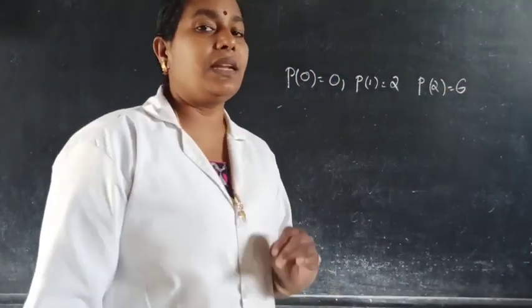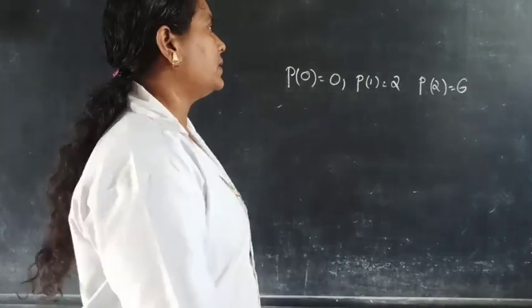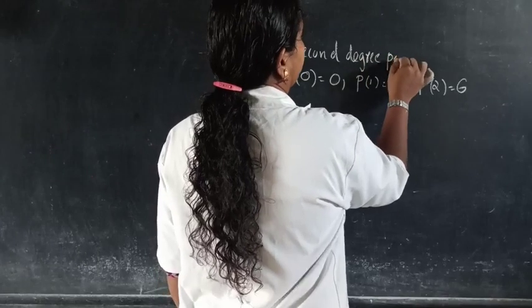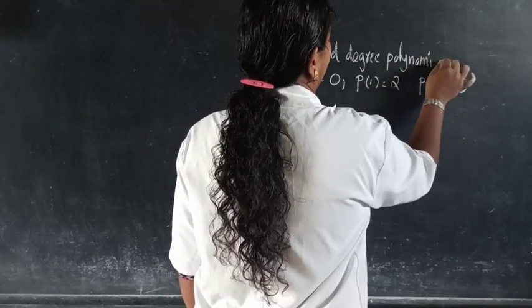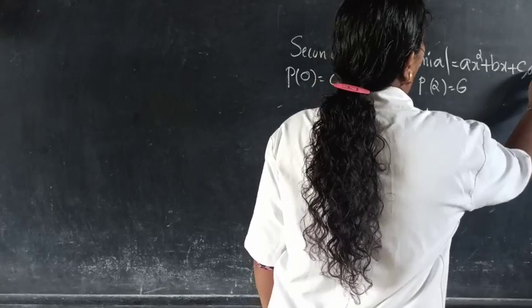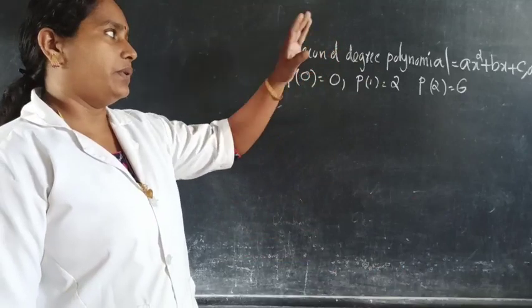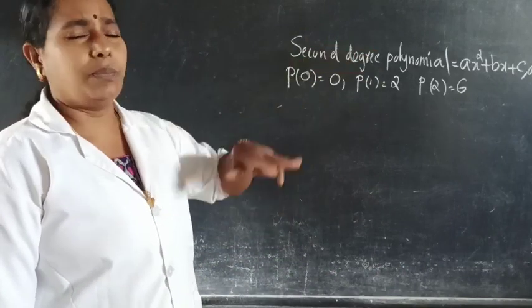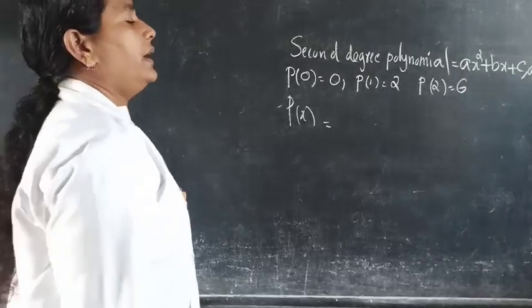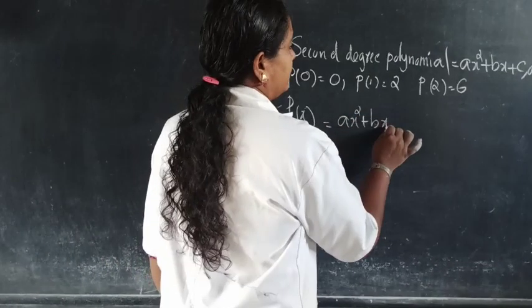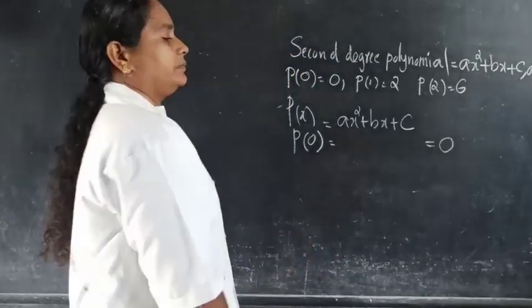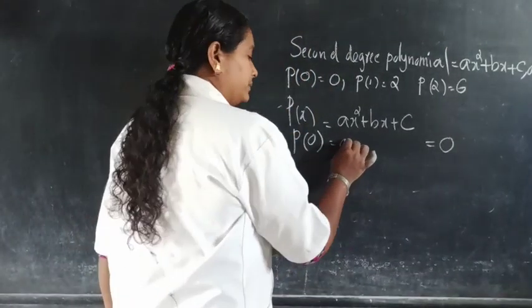We are looking for a second degree polynomial. The general form of a second degree polynomial is p(x) = ax² + bx + c. Now we apply the given conditions.